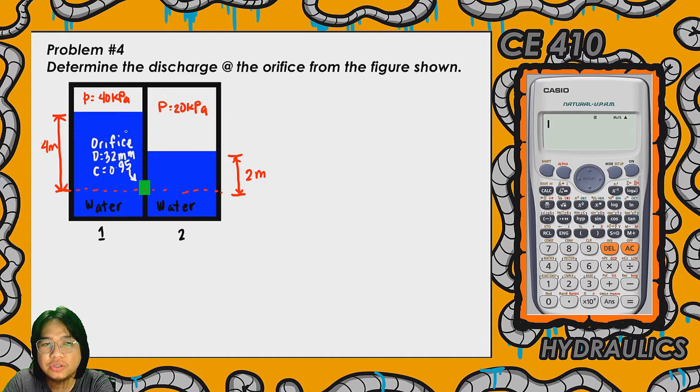Since the tank is closed, there is an input gauge pressure inside the tank. For the first chamber, the input gauge pressure or the pneumatic pressure is rated at 40 kilopascals. While on the second chamber,